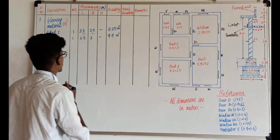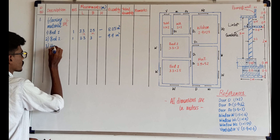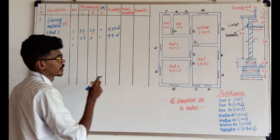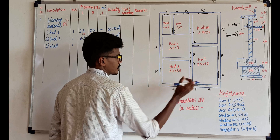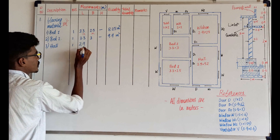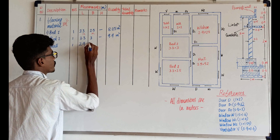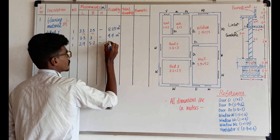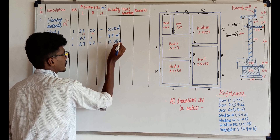Now let's go to the Hall. The length of it is 2.9m. The other dimension is 5.2. Which is equal to 15.08 m². Answer.